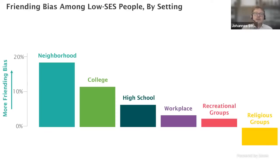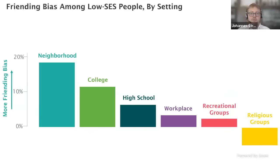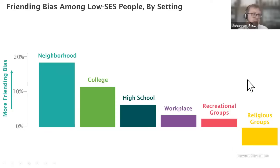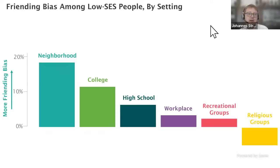These large differences in friending bias across settings suggest it is not purely capturing individual preferences, but that the structure of institutions and settings has the ability to drive these measures. We then look at friending bias across different high schools within the United States. Each dot on this graph is a high school, with the horizontal axis showing the share of high-income students — a measure of exposure — and the vertical axis showing friending bias. Even holding socioeconomic composition of a school fixed, you can get very different degrees of friending bias.